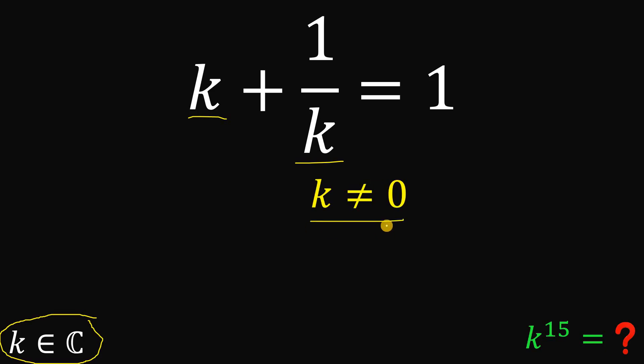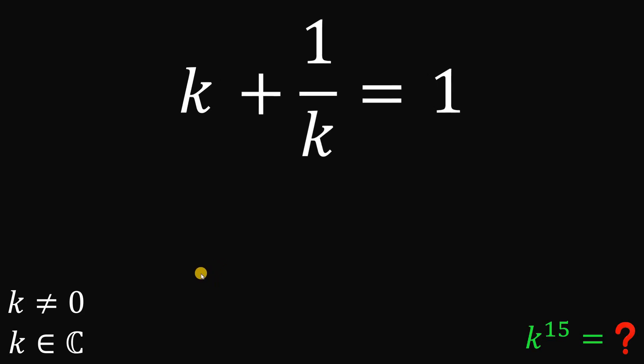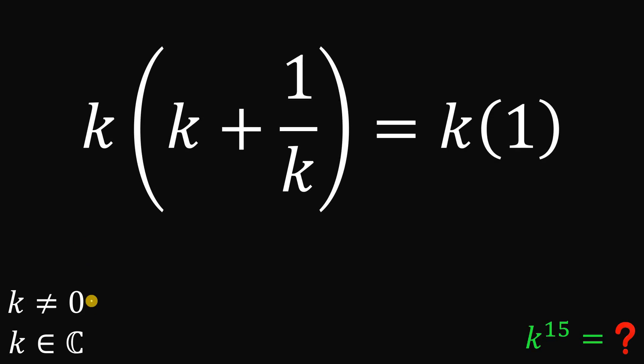We will use this condition a lot. So we know that k is not equal to 0 because what we're going to do is multiply both sides by k. Since k is not equal to 0, we are not multiplying both sides by 0. So this is legal.